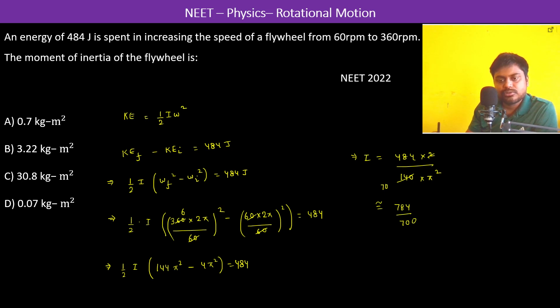484 divided by 700, so 7 divided by 4.84. The 7 we will have 49, so almost 0.7. This is equal to almost 0.7 kg meter square. So therefore A is going to be the answer.